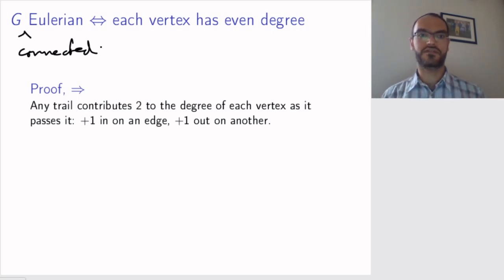So let's prove the easier direction first. Let's assume the graph is Eulerian and prove that each vertex has even degree.